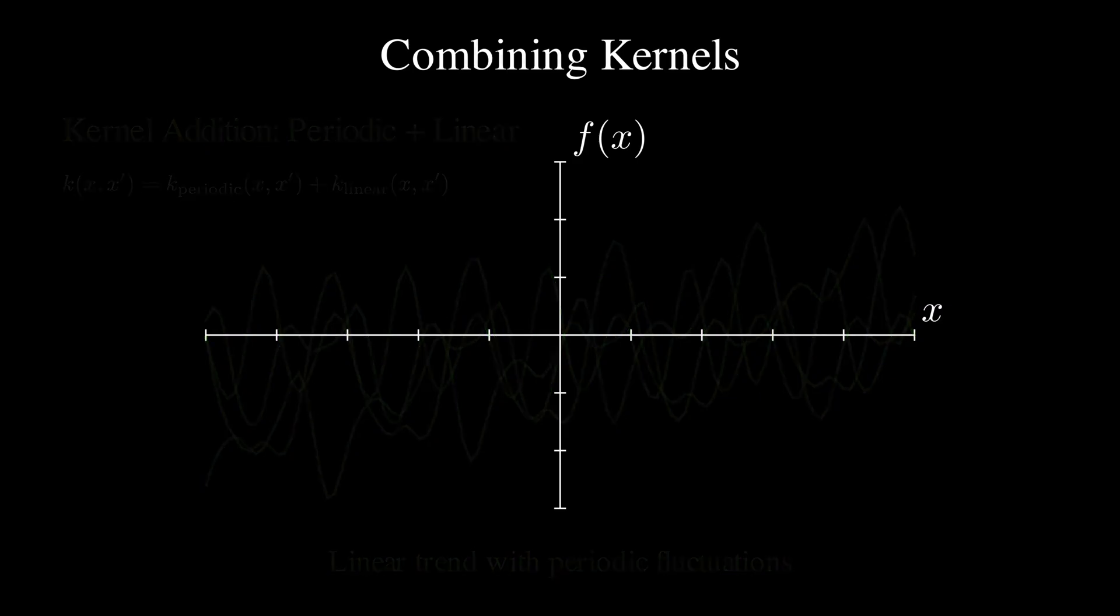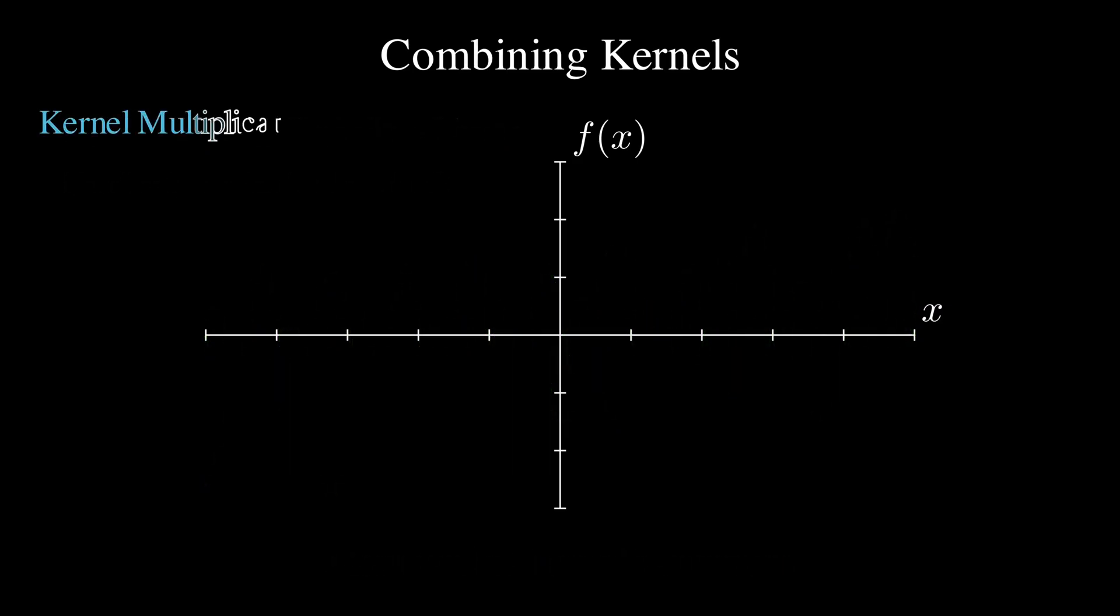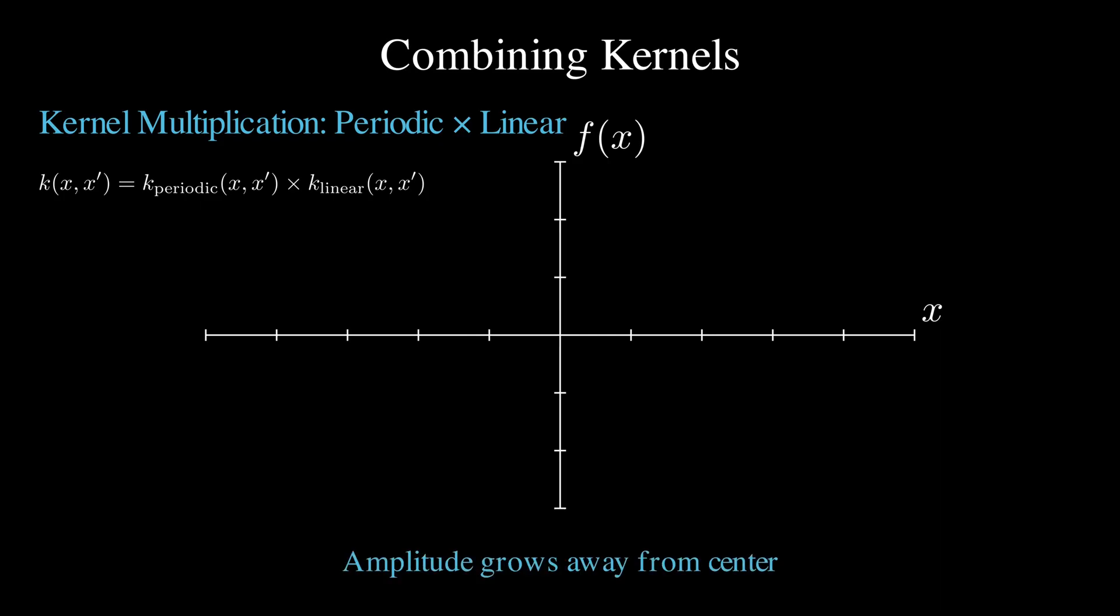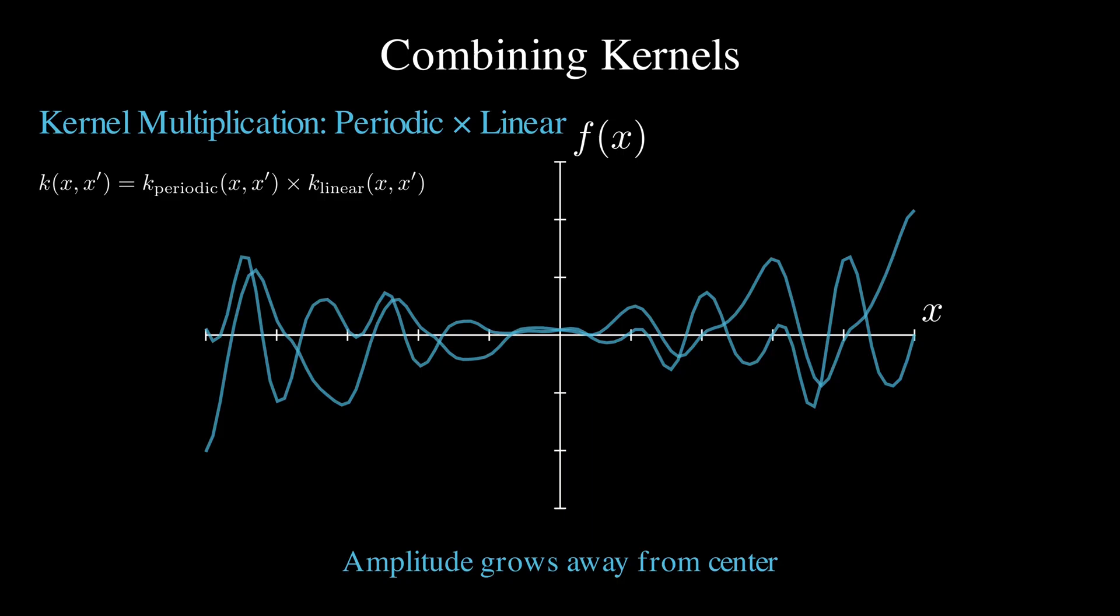We can also multiply kernels together. And by using the previous example, the formula is k(x, x') = k_periodic(x, x') × k_linear(x, x'). Multiplication creates these very interesting functions where the amplitude of the oscillations grows as we move away from the center. Which could model situations where periodic effects become more pronounced under extreme conditions.